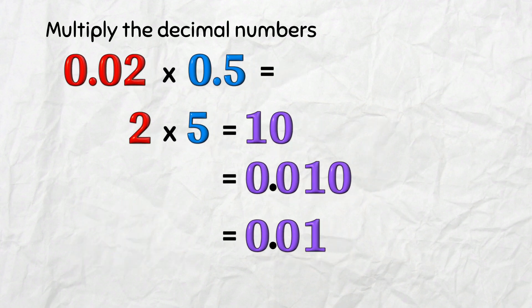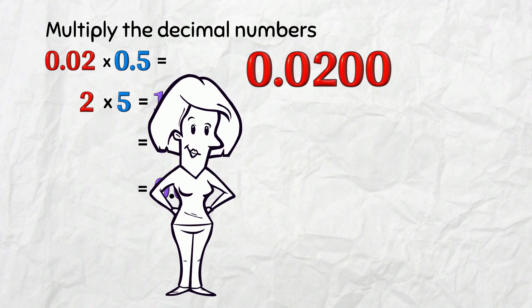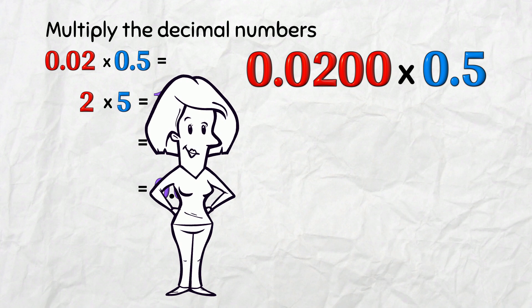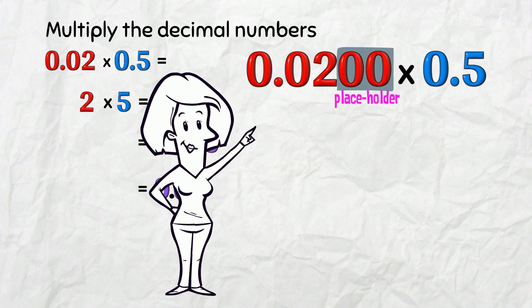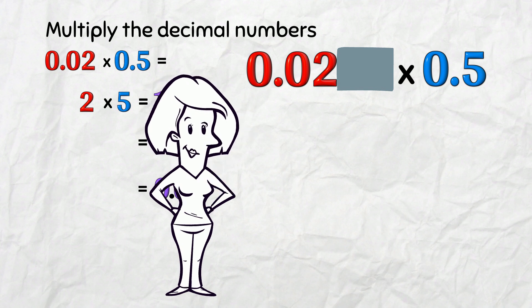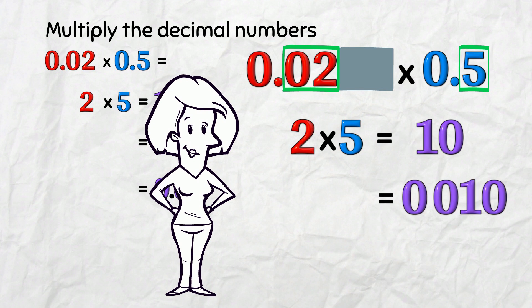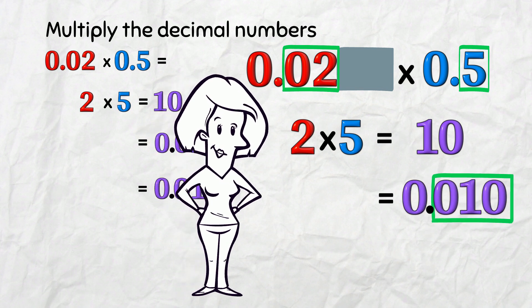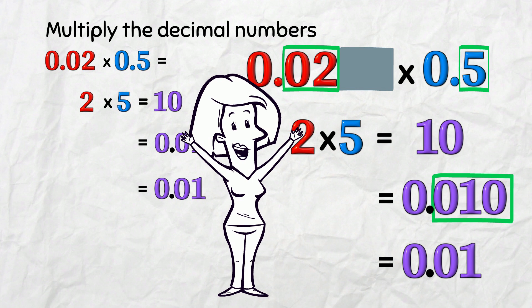And in fact, if we'd had this instead, we can eliminate those placeholding zeros before even doing the multiplication! So we're still thinking about 2 times 5, and we still have 3 decimal figures, and the answer is still 0.01.